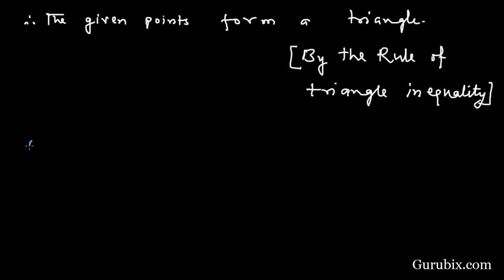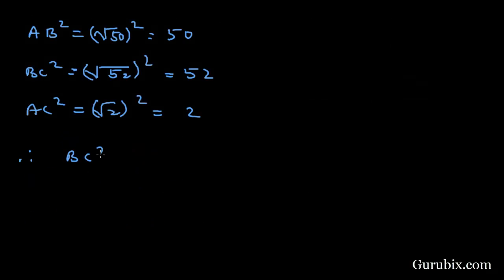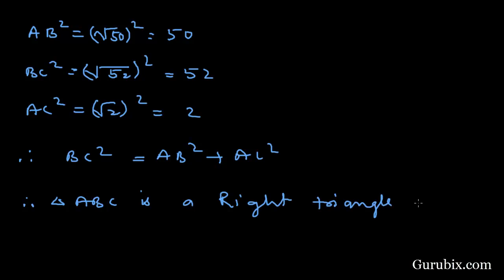Now we shall check which kind of triangle this is. We find AB² = (√50)² = 50, BC² = (√52)² = 52, and AC² = (√2)² = 2. Since BC² = AB² + AC², that is 52 = 50 + 2, triangle ABC is a right triangle with the right angle at A. This is the solution of the question. Thank you.